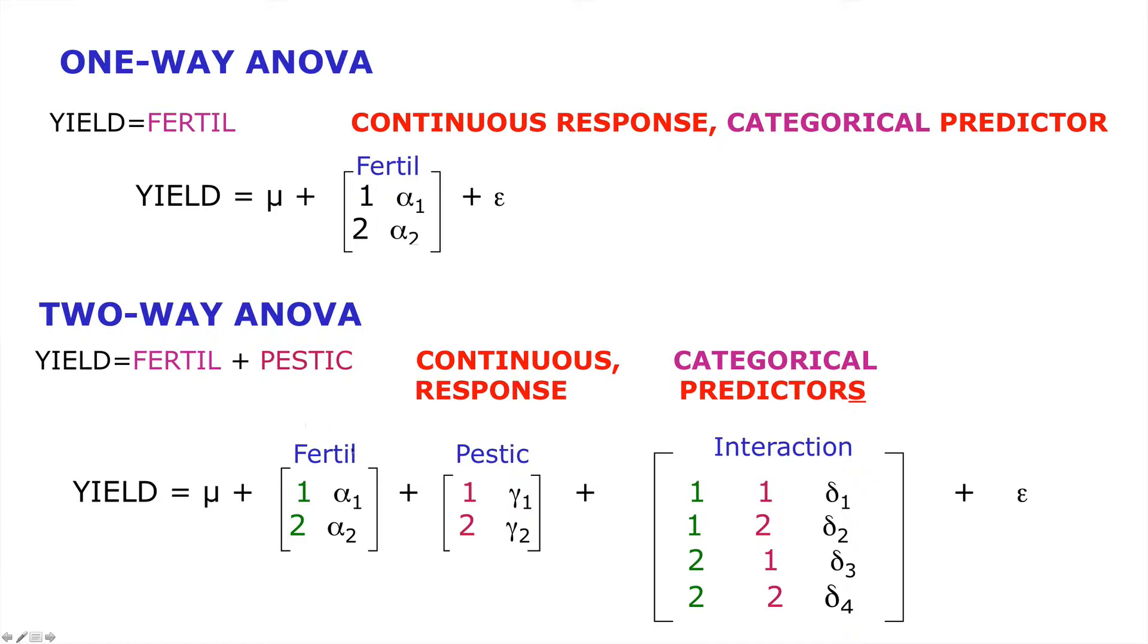And I mentioned briefly that we can build simple models with the different levels of one predictor and the different levels of another predictor. But then we can also add an interaction term for the complex way in which the individual categorical predictors might interact to influence that response.